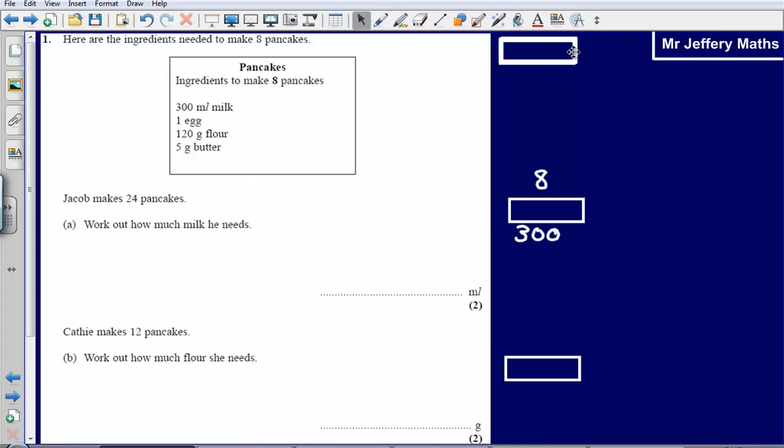So what I'm going to do is think, well, I need 24, so what if I doubled my amount here? If I doubled the number of pancakes, that would give me another 8, another 300 milliliters of milk. Well that only takes me to 16, I need to make 24, so if I do that again, I'm going to have another 8 pancakes, another 300 milliliters of milk.